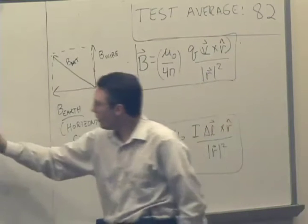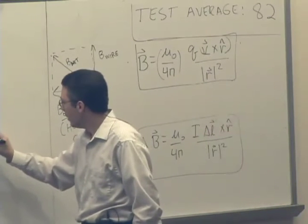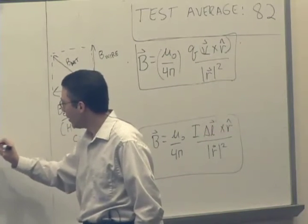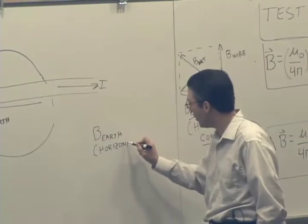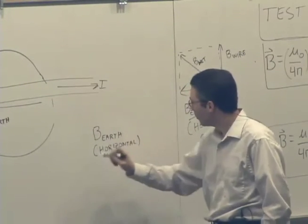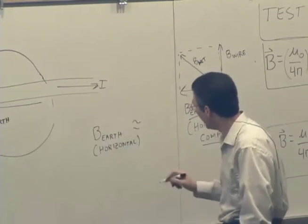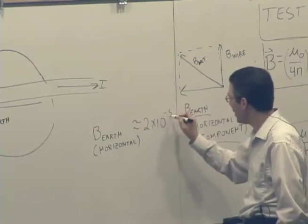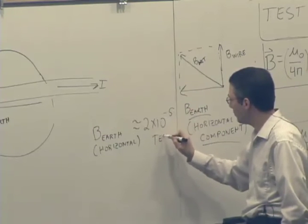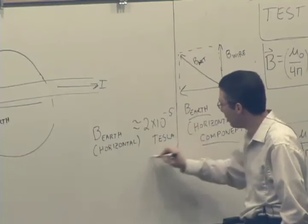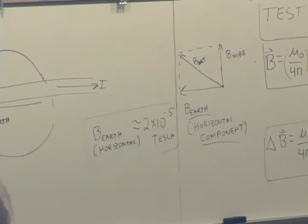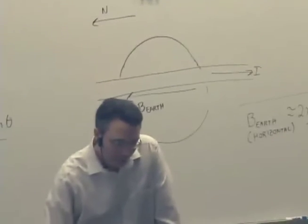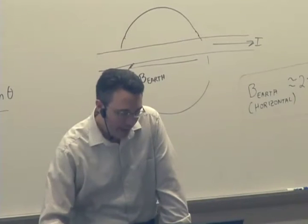The horizontal component of the magnetic field due to the Earth in our neck of the woods. It changes, of course, depending on where you are on the Earth. But in most of the continental U.S., it's about 2 times 10 to the minus 5 Tesla. So that's just a good number to keep in mind as a reference. And then we can actually use that result to calculate a magnetic field.